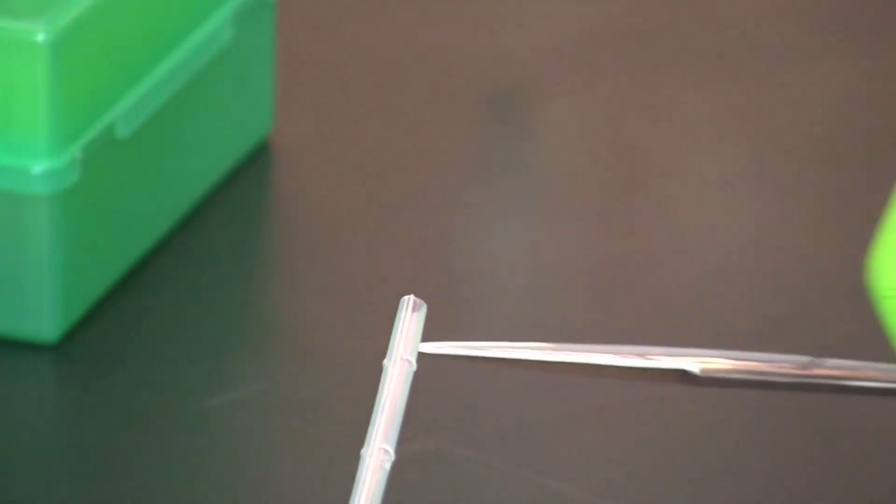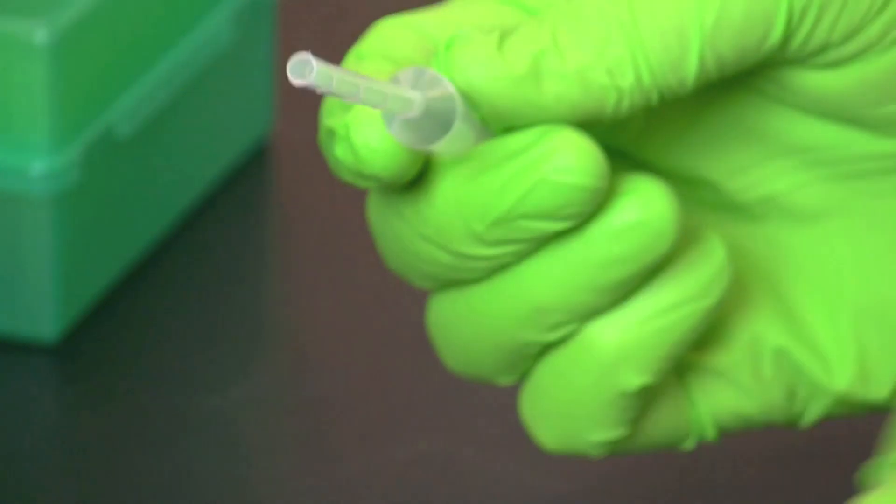Once cut, the pipette tip will be used to puncture holes out of the agarose to prepare the assay plate.